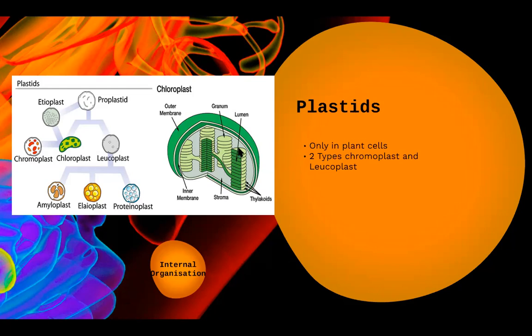Inside the thylakoid there is a lumen, and the jelly-like substance filling the complete inner cavity is called the stroma — the same concept as the matrix in mitochondria, just called stroma here. The thylakoids and grana are responsible for capturing sunlight and converting it into chemical energy, which can further be utilized for photosynthesis — that is, the formation of carbohydrate or sugar.